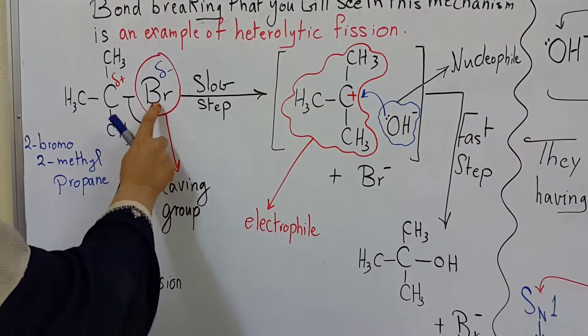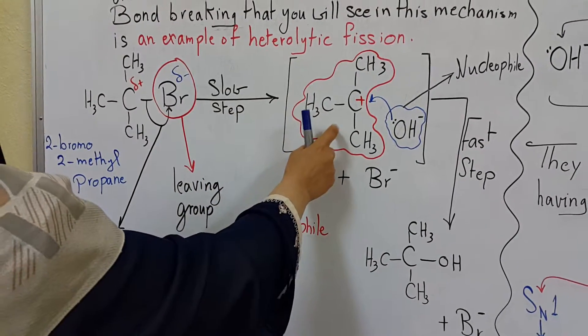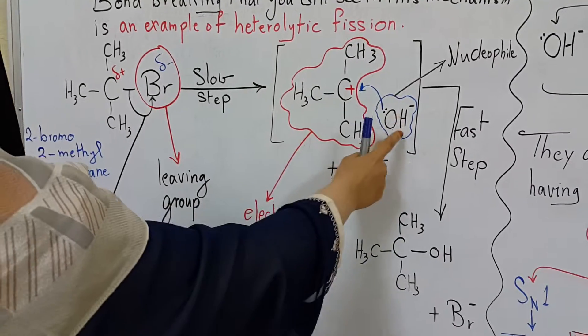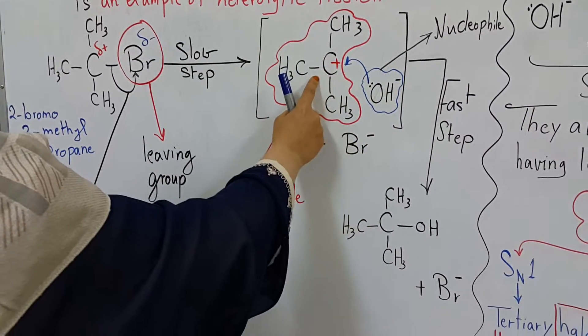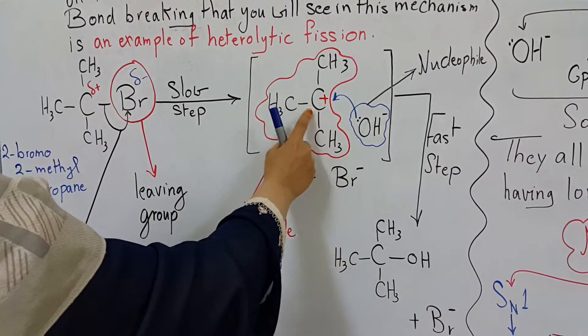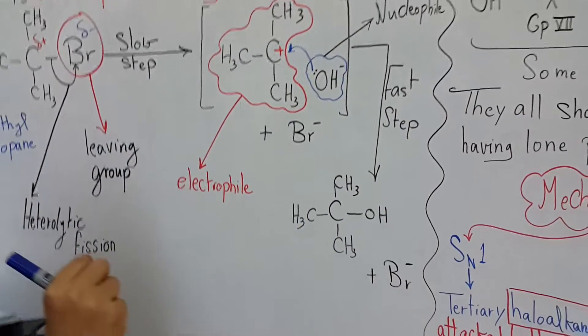Breaking the bond between the halogen atom and the rest of the compound takes time. However, the attack of a negatively charged particle on a positively charged particle happens very fast. That's why this step is so fast.